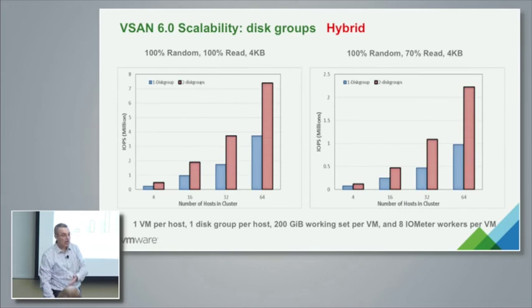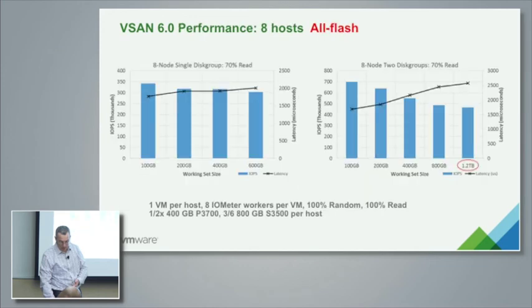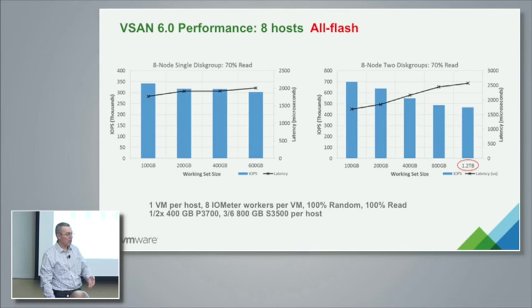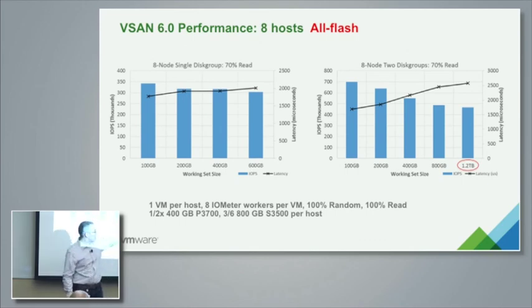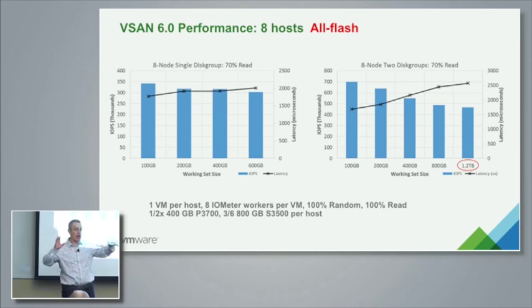Here is scalability performance for hybrid. As we add hosts, there is no impact on performance IOPS — it linearly scales and latency remains the same, because our transactions span only the breadth of an object, not the entire cluster. We get constantly 60K and 15.5K IOPS for 100% read and 70% read. More disk groups linearly help scalability — from one to two disk groups, we double performance. And here are fresh all-flash performance numbers — impressive numbers across different working sets, even where the working set is 50% bigger than the cache tier.